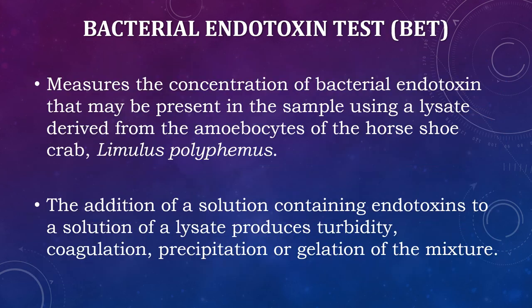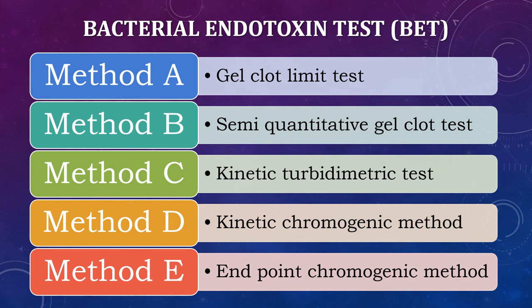The bacterial endotoxin test measures the concentration of bacterial endotoxin that may be present in the sample using a lysate derived from the amoebocyte of the horseshoe crab, i.e., Limulus polyphemus. The addition of a solution containing endotoxins to a solution of the lysate produces turbidity, coagulation, precipitation, or gelation of the mixture. Different methods are used to test bacterial endotoxin: gel clot limit test, semi-quantitative gel clot test, kinetic turbidimetry test, kinetic chromogenic method, and endpoint chromogenic method. With these methods, you can quantify the bacterial endotoxin presence inside the sample.